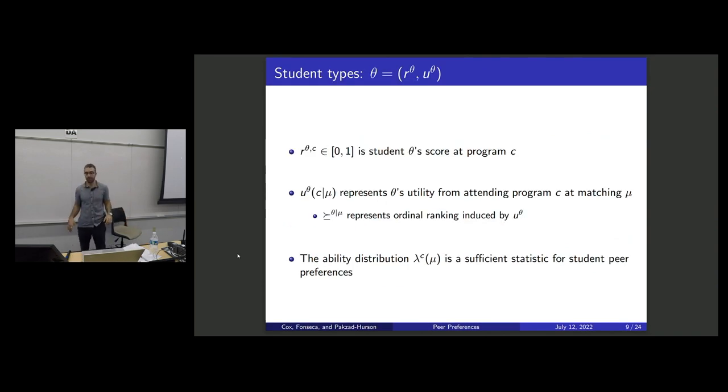And I haven't told you what the student types are. Each student is going to have two components of their type. Those are going to be first a score, this r_theta_c. So this is an n plus one dimensional vector. How much does each program like me? That's my ranking. And this u_theta is going to represent my utility, if I'm student theta, from attending program c given matching mu.